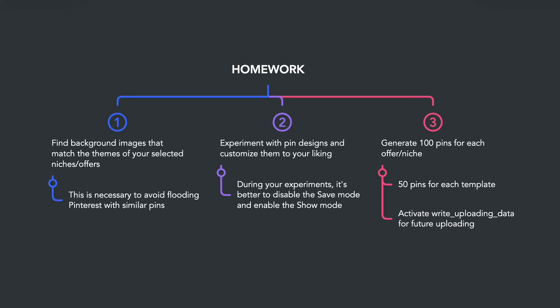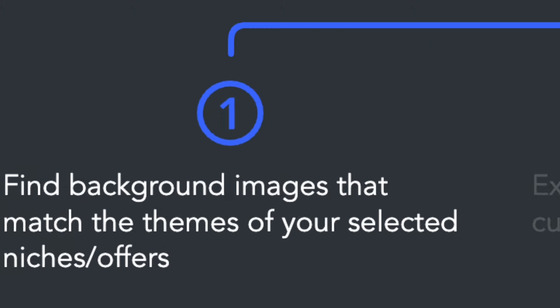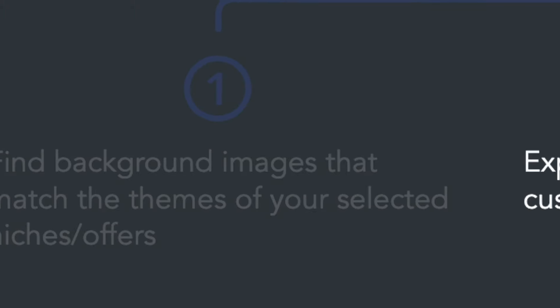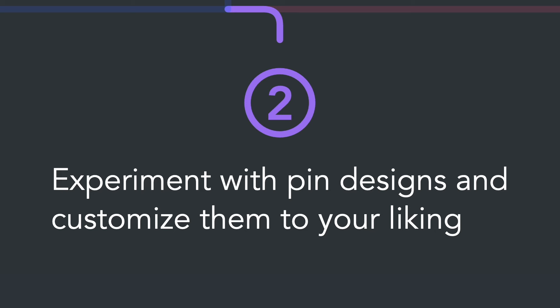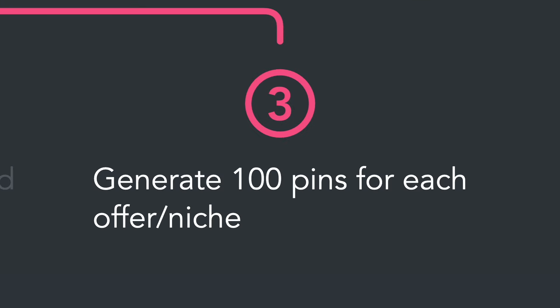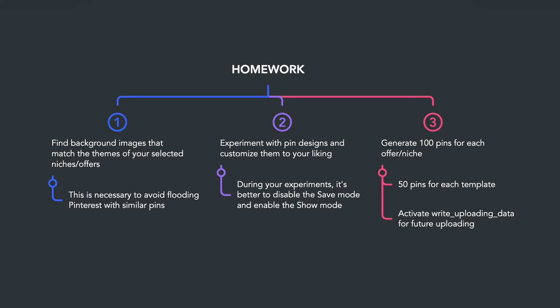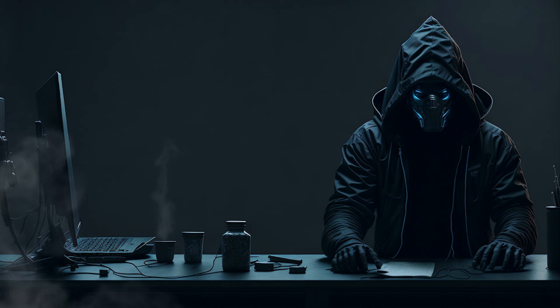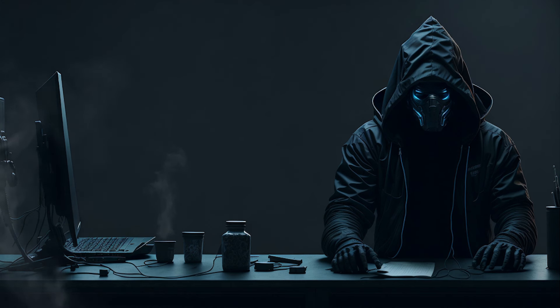Here's your homework for today's lesson: find background images that match the themes of your selected niches or offers, experiment with pin designs and customize them to your liking, and generate 100 pins for each offer. That's all for today. Our course is coming to an end. In the next lesson, we'll be developing a pinner to automate the uploading of our pins. See you in the next lesson.